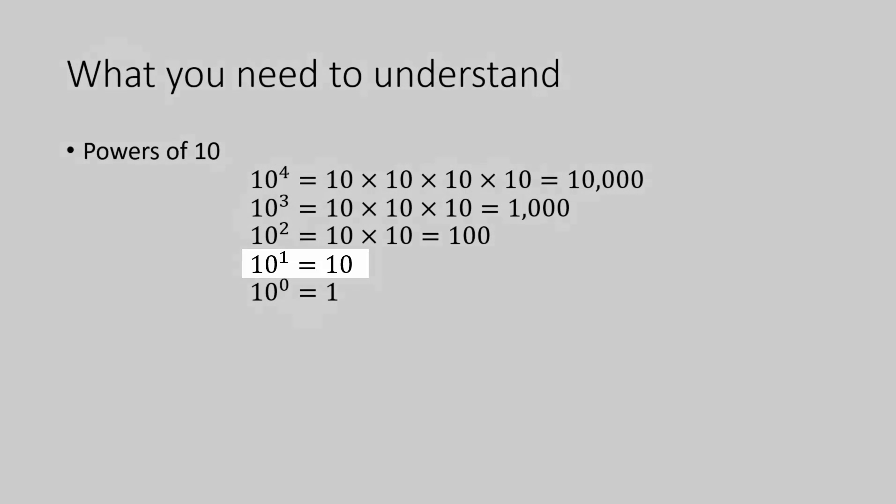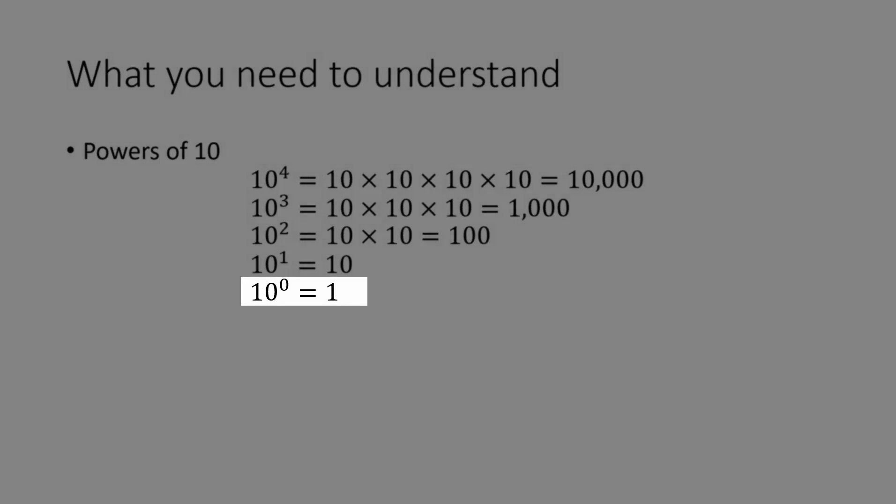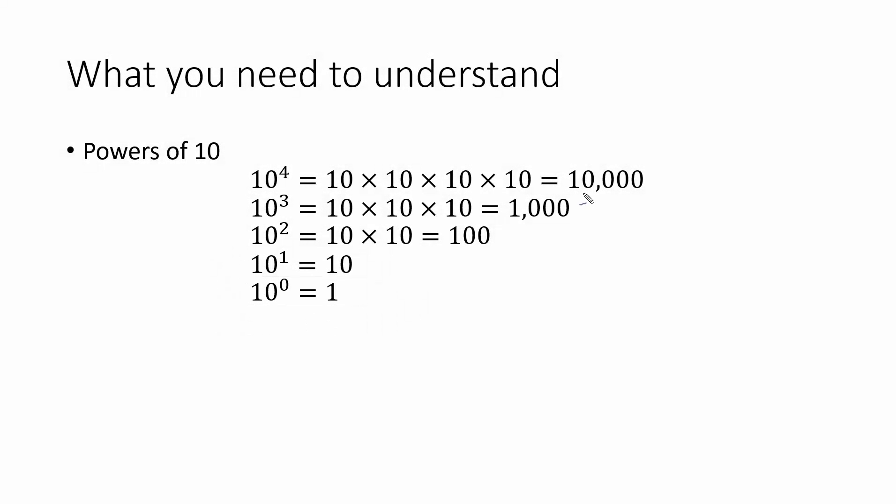And we also need to remember that 10 to the 0 power is actually 1. There's a correlation between the number of 0s, 1, 2, 3, 4 in this case, and the exponent 4. Here we have 3 0s and the exponent 3, and so on. For 10 to the 0 power, you'll notice there are actually no 0s.